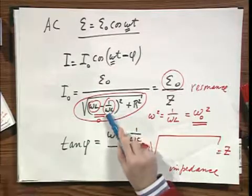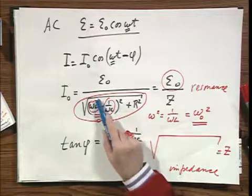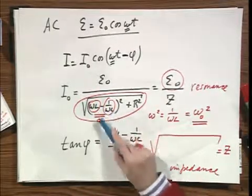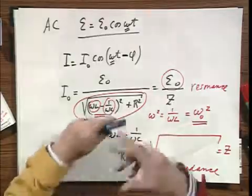If ω is low, then L plays a minor role, but C becomes very important. In your mind, if you make ω go to zero, that means there's almost no change in the EMF of the driving voltage. The capacitor simply blocks the current. It's like an opening in the wires. So at very low values of ω, when ω goes to zero...